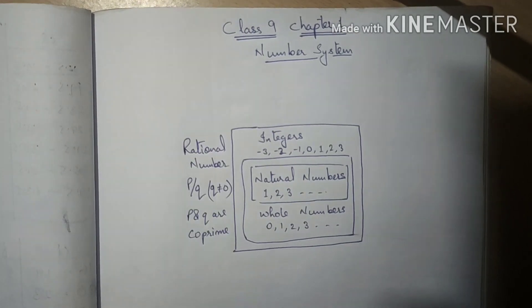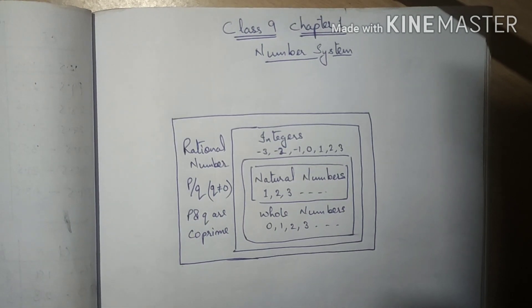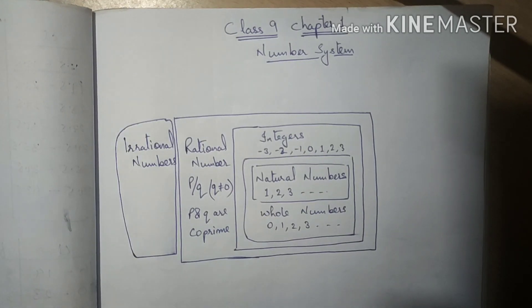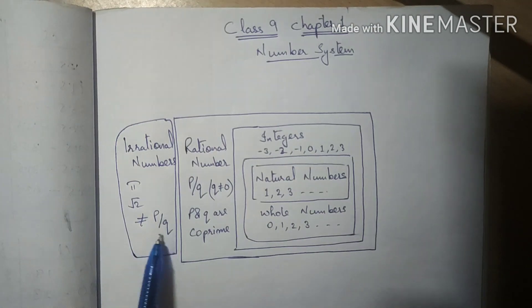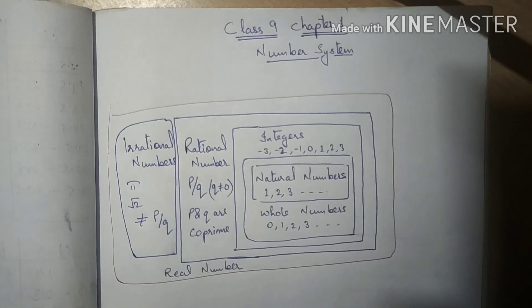Then we have rational numbers which can be written in the form of P by Q where P and Q are co-prime and Q is not equal to zero. Apart from this, we have irrational numbers like pi, root 2, root 3, which cannot be written in the form of P by Q. As a whole, all these numbers together are called real numbers.